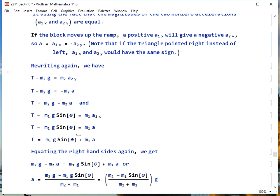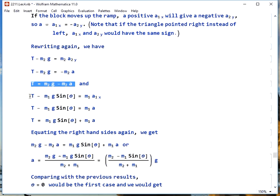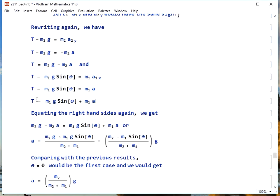With what we have now, we can rewrite this. T minus m2g is m2a2y, or T equals m2g minus m2a. For mass 1, T minus m1g sine theta equals m1a1x. We can rewrite that T equals m1g sine theta plus m1a. Yet again, we say that the tensions are equal, so we can equate the right sides of these two equations, and rearrange it to get m2 minus m1 sine theta over the sum of the masses, all times g, is the acceleration.